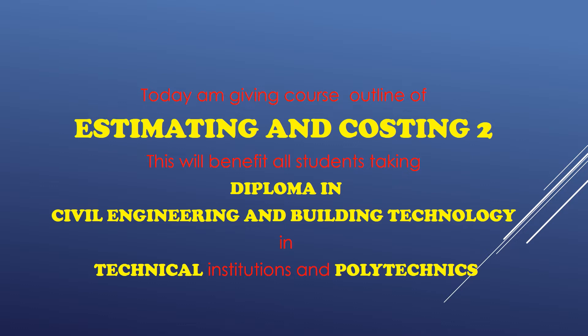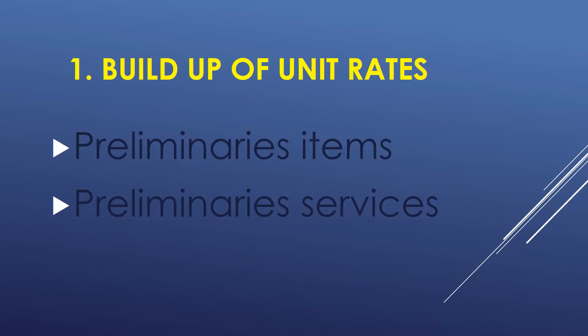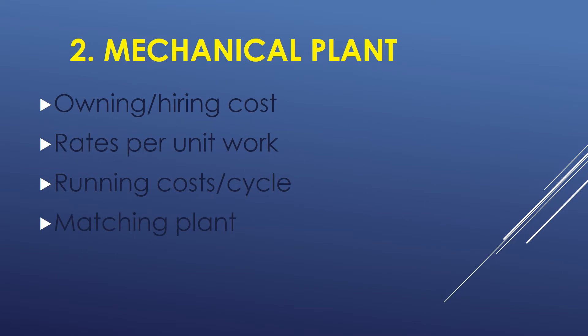The first topic will cover the build-up of unit rates — that's the main topic in this unit. Under that we'll do activities, preliminaries items and preliminary services. Topic two covers mechanical plants: owning or hiring cost rates per unit, running costs per cycle, and matching plants.